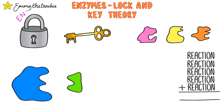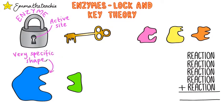Enzymes are like a padlock and the active site is the keyhole. It has a specific shape, which is really important as it allows just one key to fit inside it. The key is called the substrate — this is a word you need to learn. Because enzymes and substrates work together like a lock and a key, we call this the lock and key theory of enzymes.